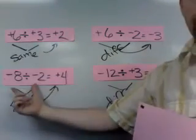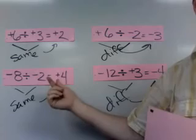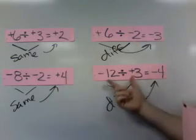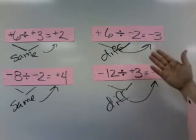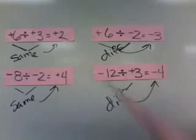If the signs are the same with your division, the answer is going to be positive. If the signs are different that you're dividing, then the answer is going to be negative. Let's use one quick example.